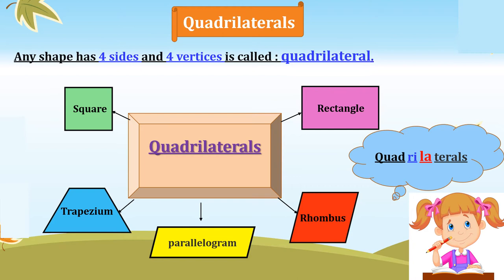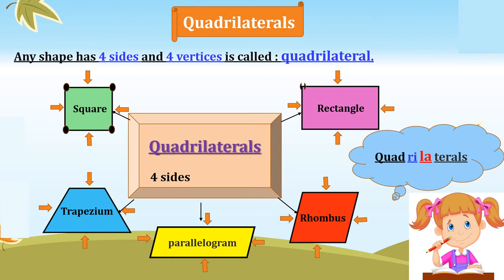All of these shapes — square, rectangle, trapezium, rhombus, and parallelogram — have four sides and four vertices. Let's count the sides: one, two, three, four for each. And all of them have four vertices. So any shape with four sides and four vertices is called a quadrilateral.